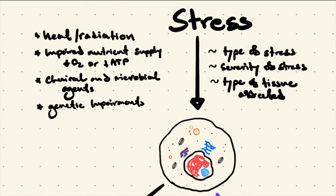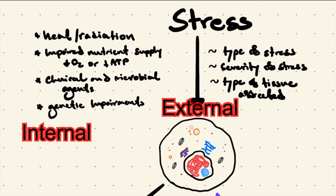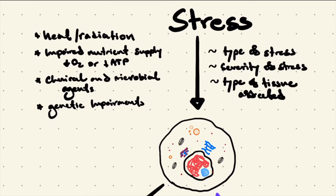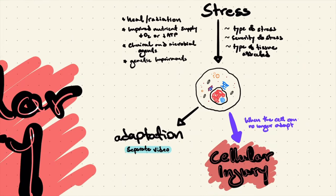There are several types of stresses, divided into two groups: internal and external. Examples of internal stress include genetic impairments within the cell's metabolism pathway, and examples of external stress include heat, radiation, or trauma. Cells like to be in homeostasis, so they will respond to stress. However, this response depends on the type of cell, the severity of the stress, and the type of tissue affected. Generally, a cell would like to adapt to the stress, but if the stress is too severe and the cell is not able to adapt, the cell will be injured.